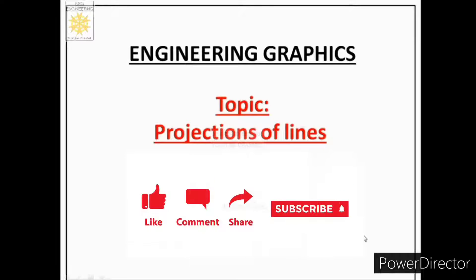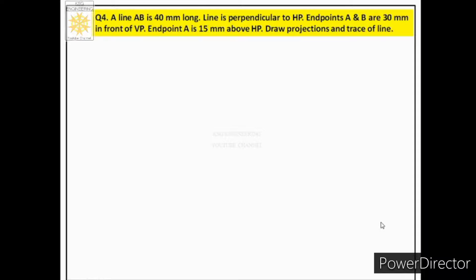Welcome to another lecture on engineering graphics. Today we will learn about projections of lines. We will discuss case 4 of a line. The statement reads: a line AB is 40 mm long. The line is perpendicular to the horizontal plane, points A and B are 30 mm in front of VP, and point A is 15 mm above HP. Draw projections and trace of the line.